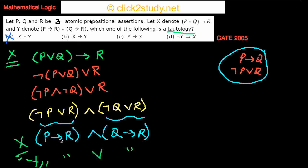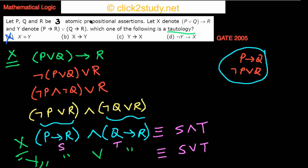To make this cleaner, let S denote 'P implies R' and T denote 'Q implies R.' Then X becomes S and T, and Y becomes S or T. So we need to check whether X implies Y — that is, whether (S and T) implies (S or T).